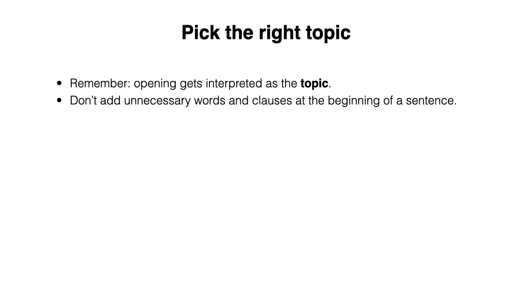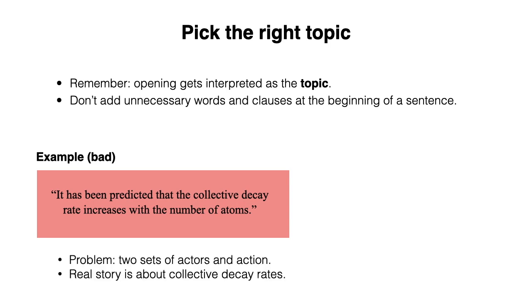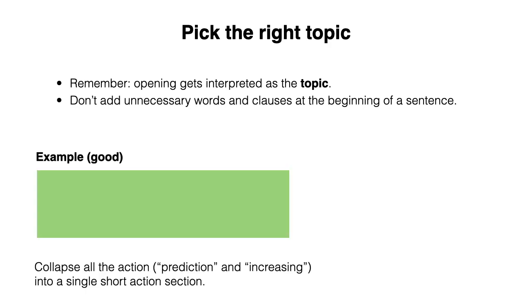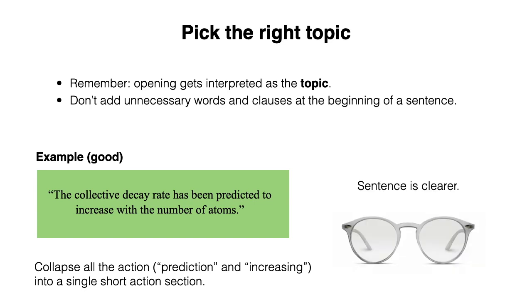It's also important to make sure that you pick the right topic. Remember that the opening gets interpreted as the topic, so don't add unnecessary words and clauses at the beginning of a sentence. Let's look at a bad example: "It has been predicted that the collective decay rate increases with the number of atoms." So what's the problem here? Well, we have two sets of actors and action. The first is someone doing the predicting, and the second is the collective decay rates increasing. In this case, the real story is about the collective decay rates, so don't open your sentence with nameless people who did the predicting. We can fix this by collapsing all the action into a single short action section: "The collective decay rate has been predicted to increase with the number of atoms."